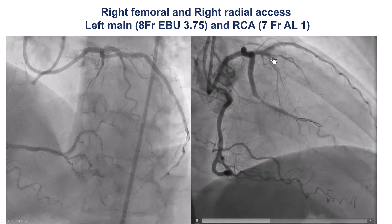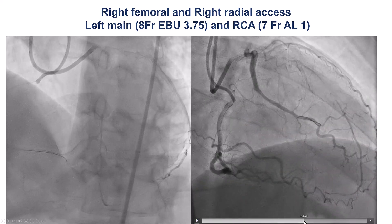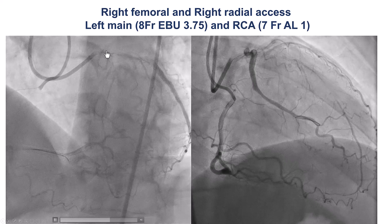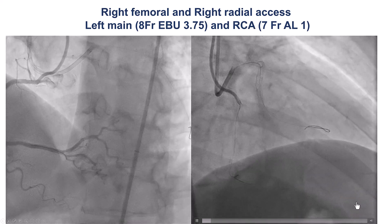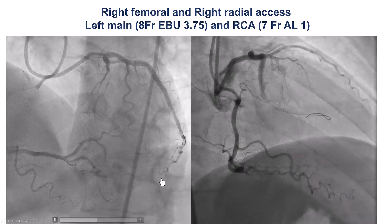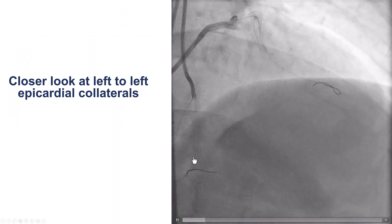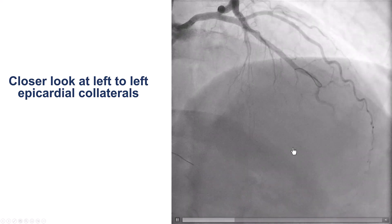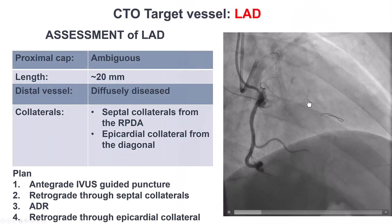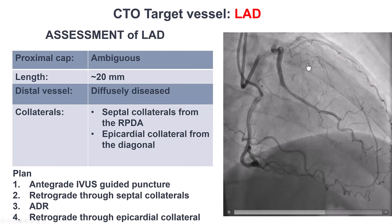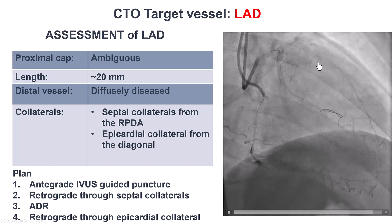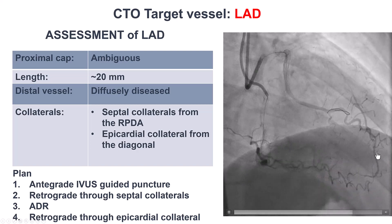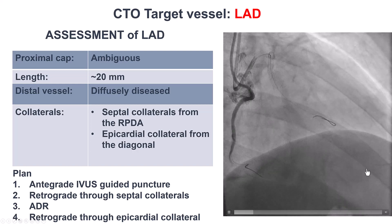Dual angiography shows the CTO of the LAD. There is an ambiguous proximal cap close to the takeoff of a septal branch — the same we can see here on the heliocranial view — and there are both septal as well as epicardial collaterals filling the LAD. The epicardial collateral is from the diagonal branch that goes all the way to the apex and then fills the LAD retrogradely. So we have a CTO of the LAD with an ambiguous proximal cap, a short length of about 20 millimeters, a small and diffusely diseased distal vessel, septal collaterals from the right, and an epicardial collateral from the diagonal filling the distal LAD.